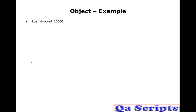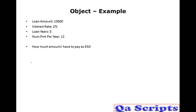Let us take a general example. Someone wants to take a loan of 10,000 rupees. The rate of interest for that 10,000 is 2%. The loan duration is 5 years. But I don't know how much I have to pay as an EMI per month. He wants to calculate that and know what is the EMI and how long he can pay it.